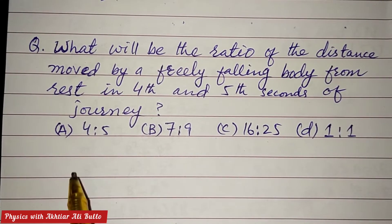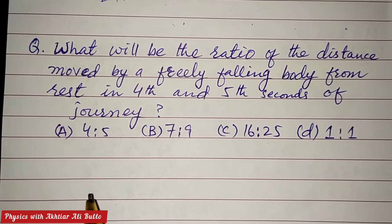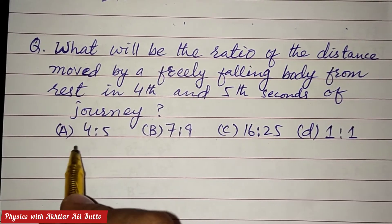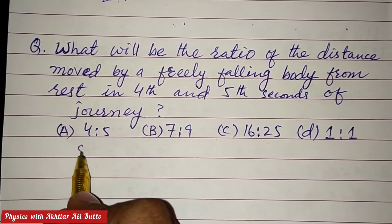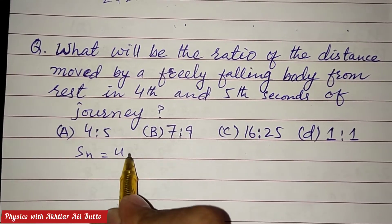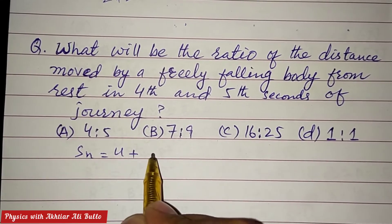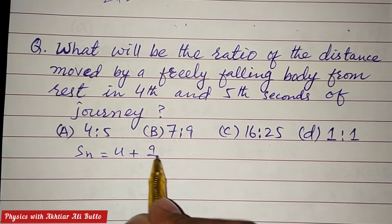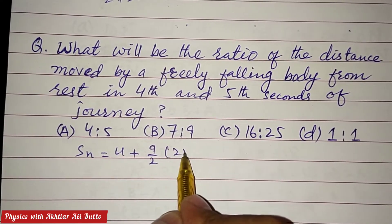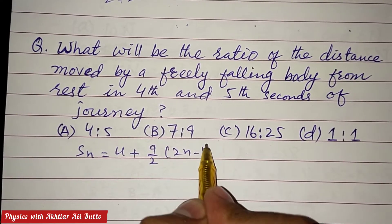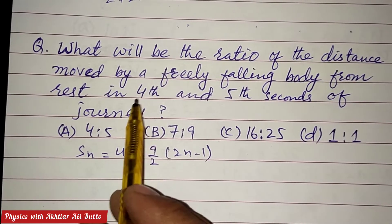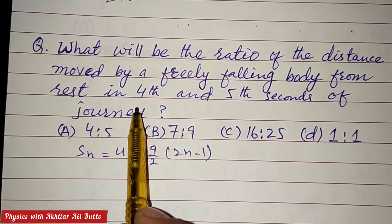To calculate the distance in the nth second, we will use the formula: distance in nth second is equal to u plus a upon 2 into (2n minus 1). First we will calculate the distance in the fourth second, and secondly the distance in the fifth second.